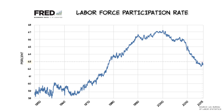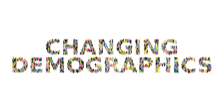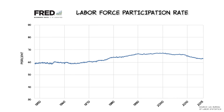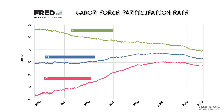Why does the participation rate vary over time? One reason is changing demographics. Let's add to the data the male and female labor force participation rates. We can now see the changes in the total rate have been influenced by two quite different trends: a dramatic increase in the female rate — the red line at the bottom — and a smaller but steady decrease in the male participation rate, in green at the top.